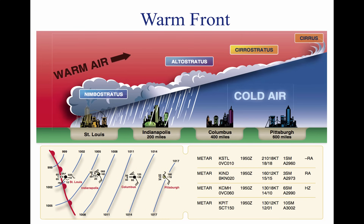A warm front occurs when a warm mass of air advances and replaces a body of colder air. Warm fronts move slowly, typically 10 to 25 miles per hour. The slope of the advancing front slides over the top of the cooler air and gradually pushes it out of the area. Warm fronts contain warm air that often has very high humidity. As the warm air is lifted, the temperature drops and condensation occurs.